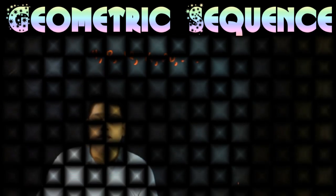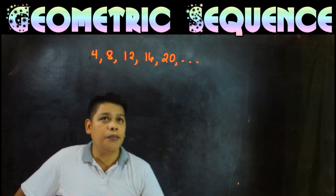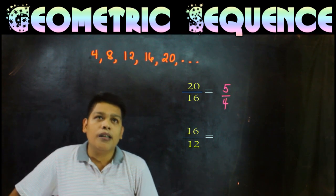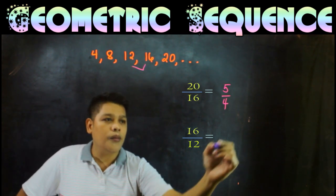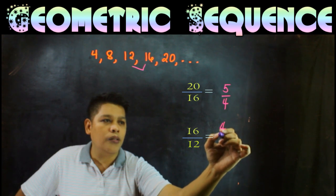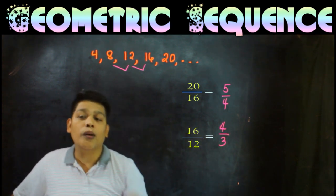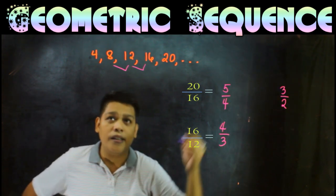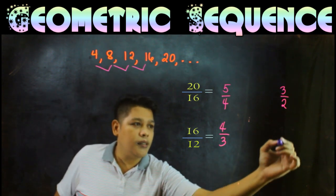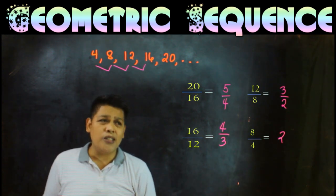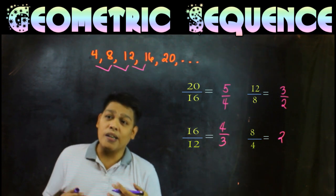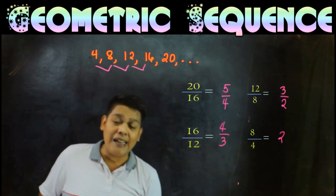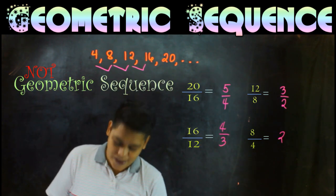Next example, 20 divided by 16 is 5 over 4 in lowest terms. Then 16 divided by 12 is 4 over 3. Then 12 divided by 8 is 3 over 2. And 8 divided by 4 is 2. What do you notice? It has no common ratio. The ratios are not the same. This means this sequence is not geometric sequence.